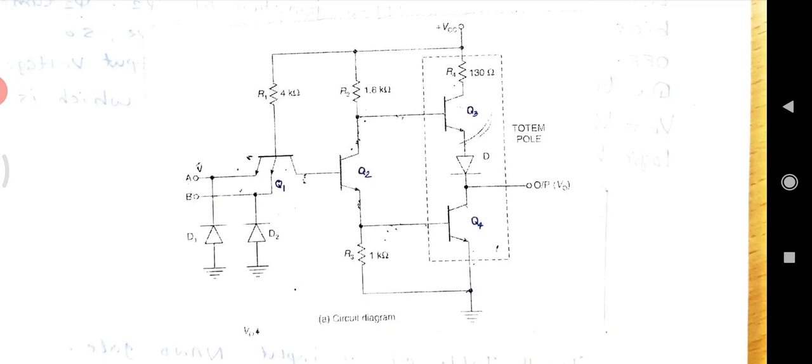Hence, Vb3 equal to Vc2 is approximately equal to 0.7V plus 0.3V is equal to 1V.